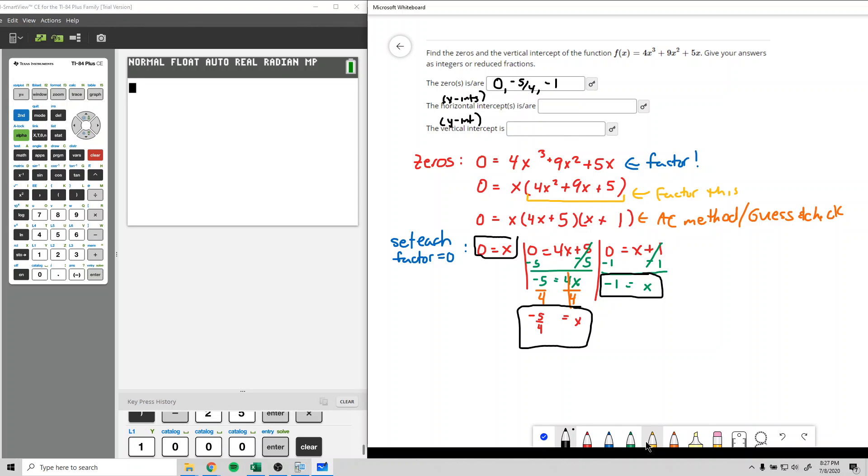Now remember, the x-intercepts are the same thing as the zeros, except these are the x value of the coordinates and the y value is 0.